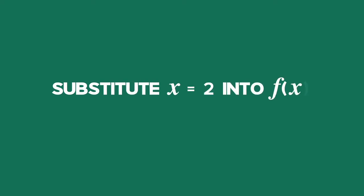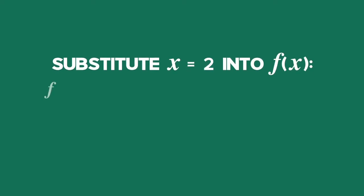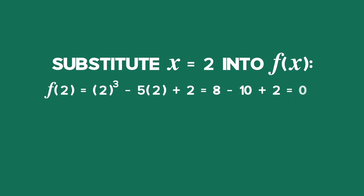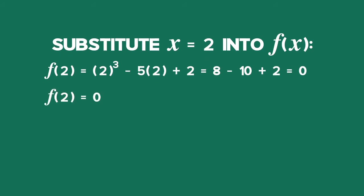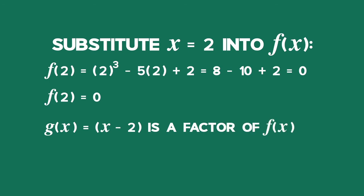Substitute x equals 2 into f of x. So f of 2 equals 2 cubed minus 5 times 2 plus 2, which equals 8 minus 10 plus 2, which is equal to 0. Therefore, the value of f of 2 equals 0. In conclusion, g of x equals x minus 2 is a factor of f of x.